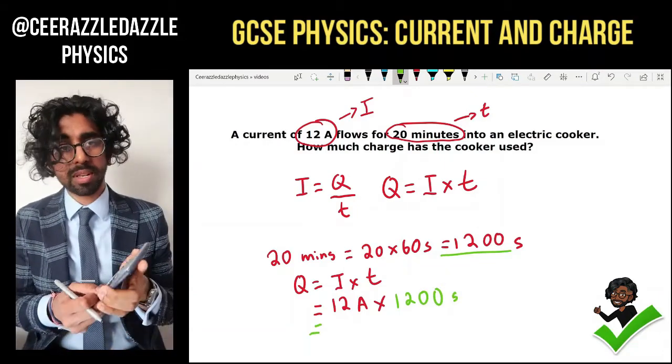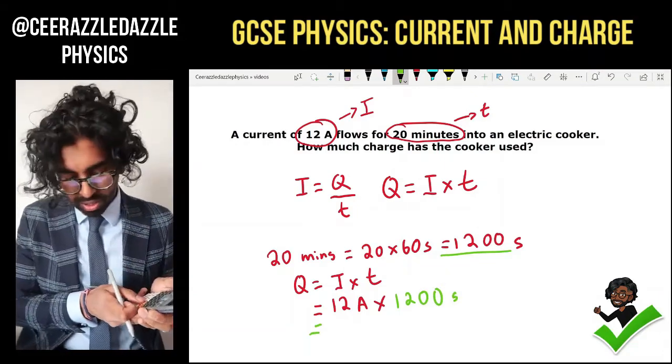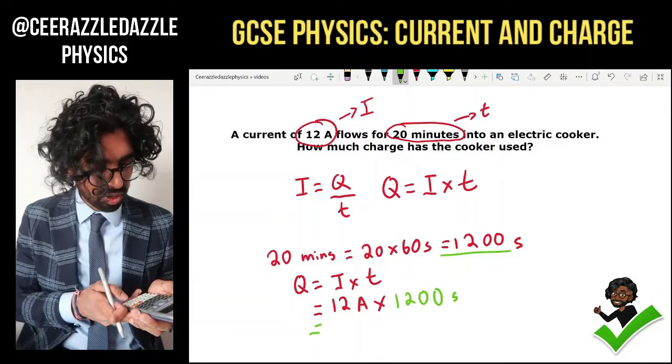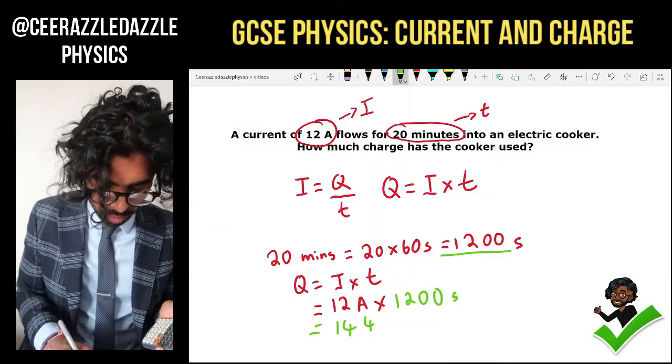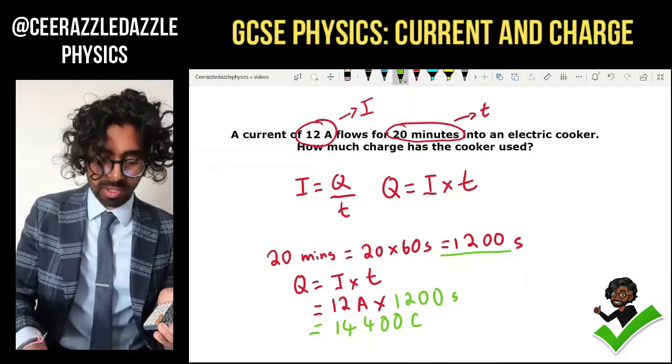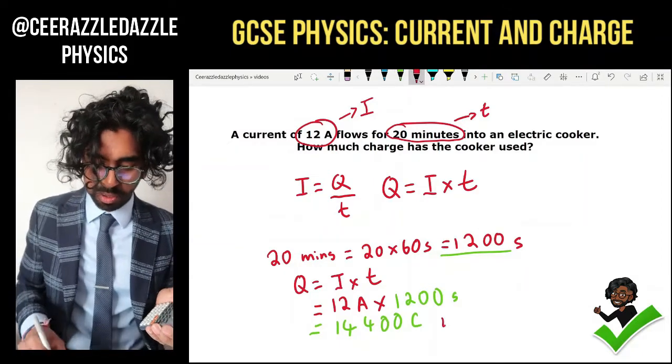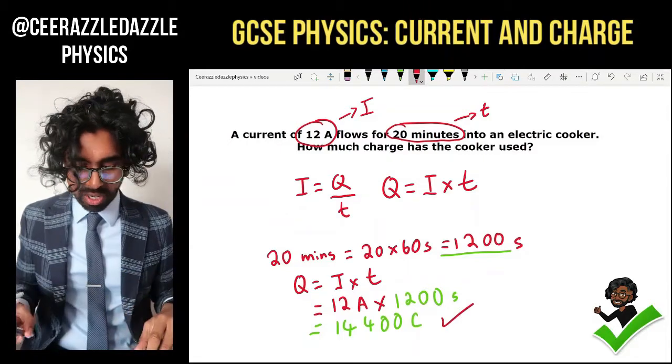Therefore put that into a calculator now. We're going to do 12 times by 1,200. Bang. You've got 14,400 coulombs. Nice. Superb stuff. Okay, so we've done another one.